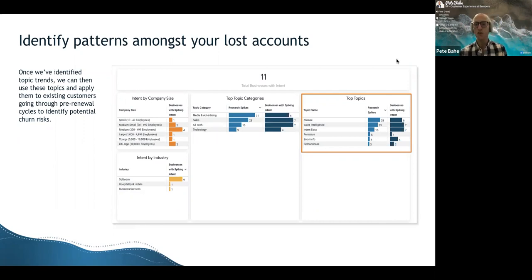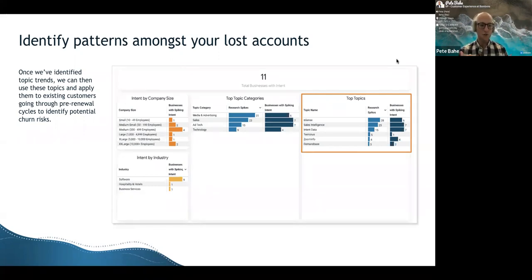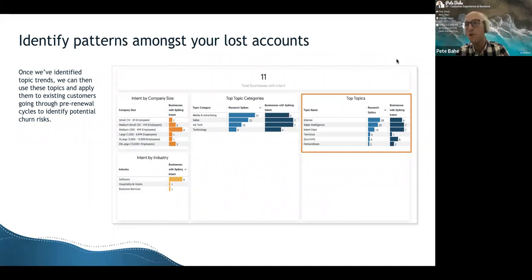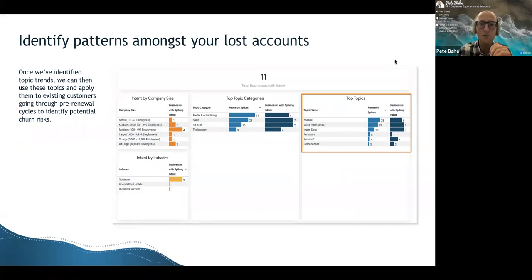A lot of people think creating a churn signal means just grabbing a group of competitors, throwing them into a pile, and if customers start to show research behavior on competitors or partners, reaching out. Yes, you probably should have a conversation — but it's not a true churn signal because there are false positives. Maybe they're just doing research on a platform they already have. So we want to create a group of topics that aren't just competitor names — it's also all the other things that could signal macroeconomic events happening within their environment.